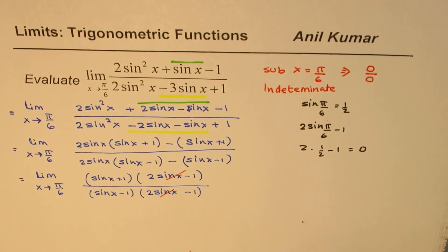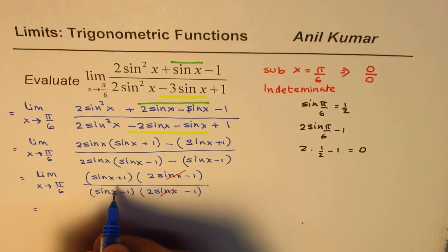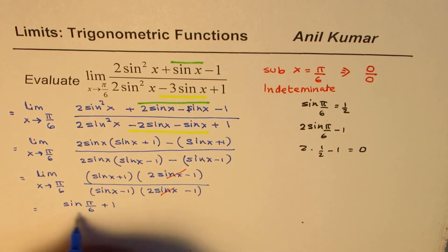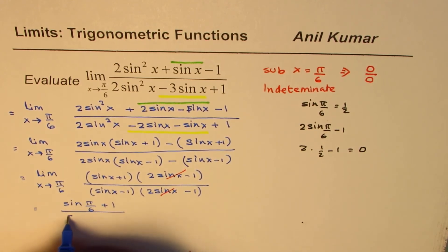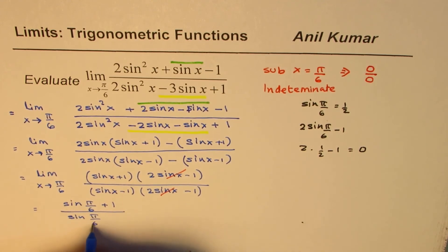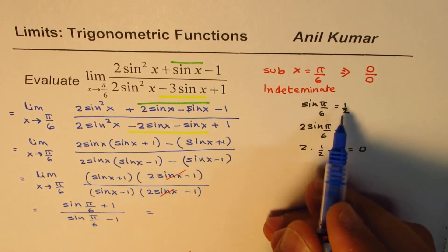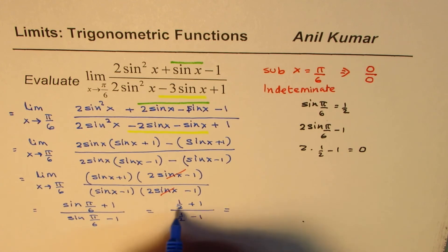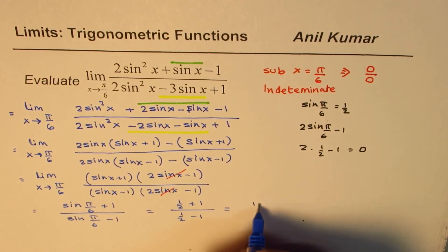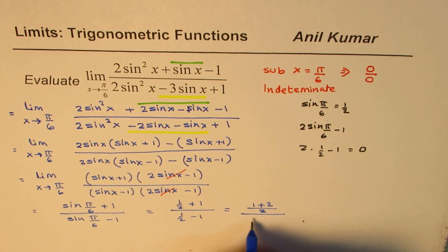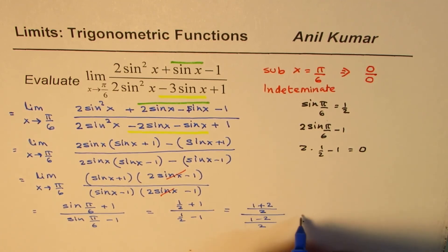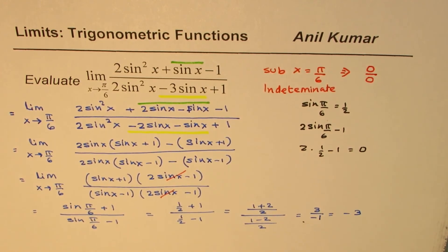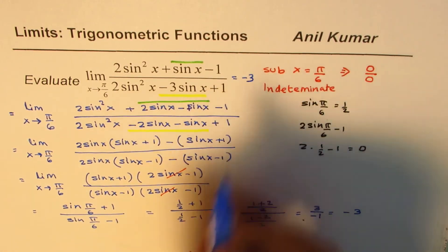And now we can substitute π/6 and get the limit for the given function. So we can write this as sin(π/6) plus 1 divided by sin(π/6) minus 1. Sin(π/6) is half. So we get half plus 1 divided by half minus 1. So we can take 2 as common denominator: (1 + 2)/2 divided by (1 - 2)/2. These two cancel. So we have 3 over -1 or -3. Therefore this limit is equal to -3.